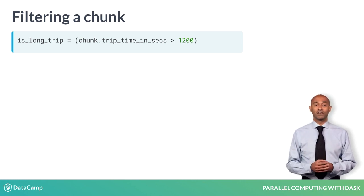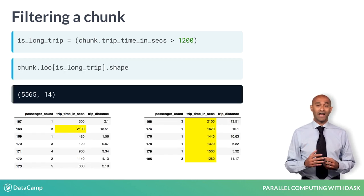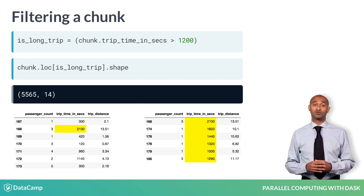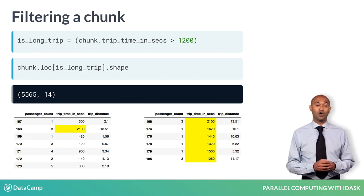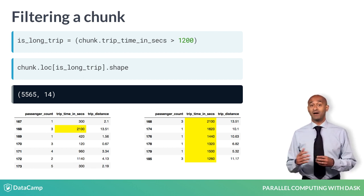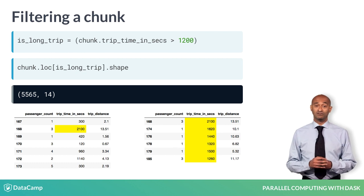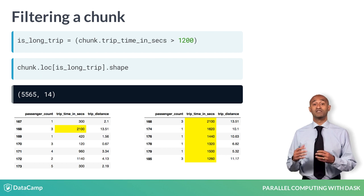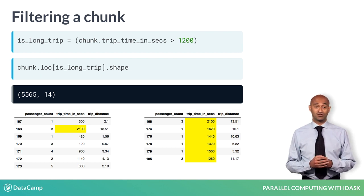Recall we can use the .loc accessor with the Boolean series IsLongTrip to filter rows where this condition holds. The shape attribute reveals about 5,500 taxi rides longer than 20 minutes in duration from this chunk of 50,000 trips.